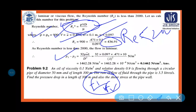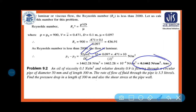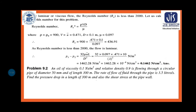Now applying ΔP = 32μu̅L/d²: substituting μ = 0.097, u̅ = 0.471, L = 10, d = 0.1. The pressure drop ΔP = 0.1462 N/cm².